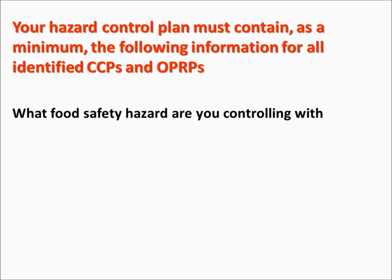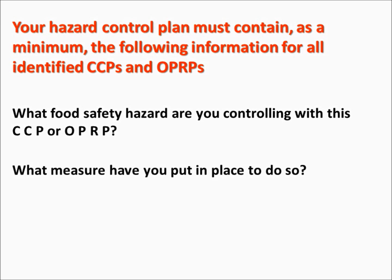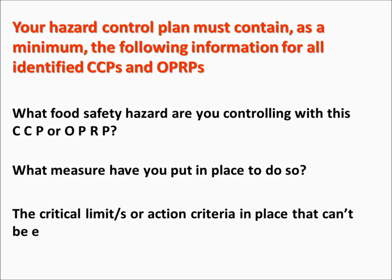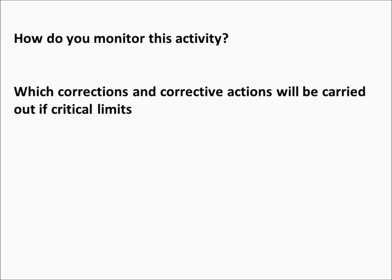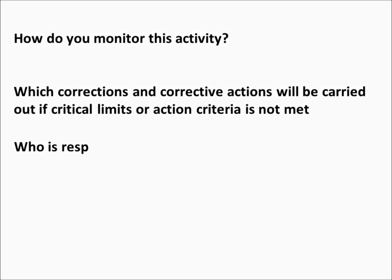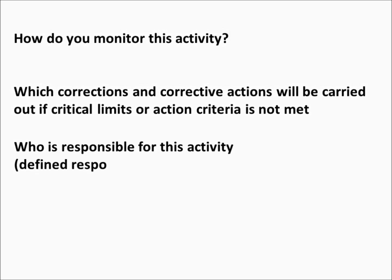The hazard control plan must include: what food safety hazard you are controlling with the CCP or OPRP; what measure you have put in place to do so; the critical limits or action criteria in place that cannot be exceeded; how you monitor this activity; which corrections and corrective actions will be carried out if critical limits or action criteria are not met; and who is responsible for this activity, with defined responsibilities and authorities.